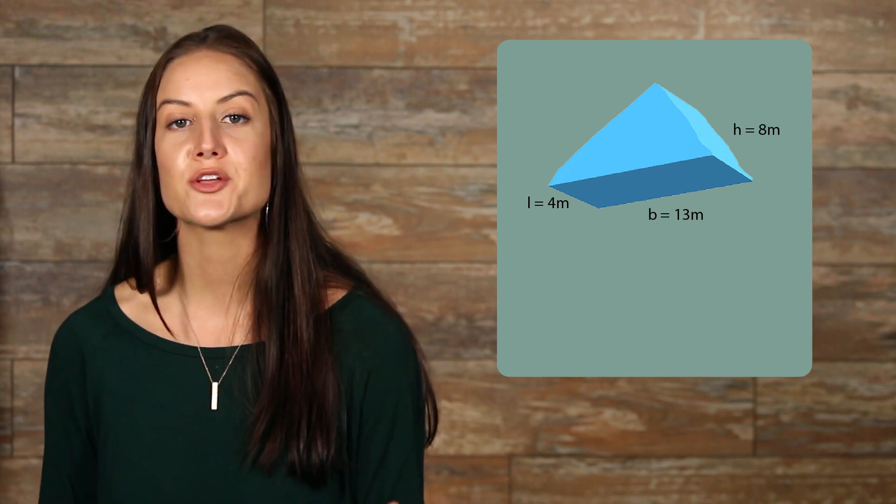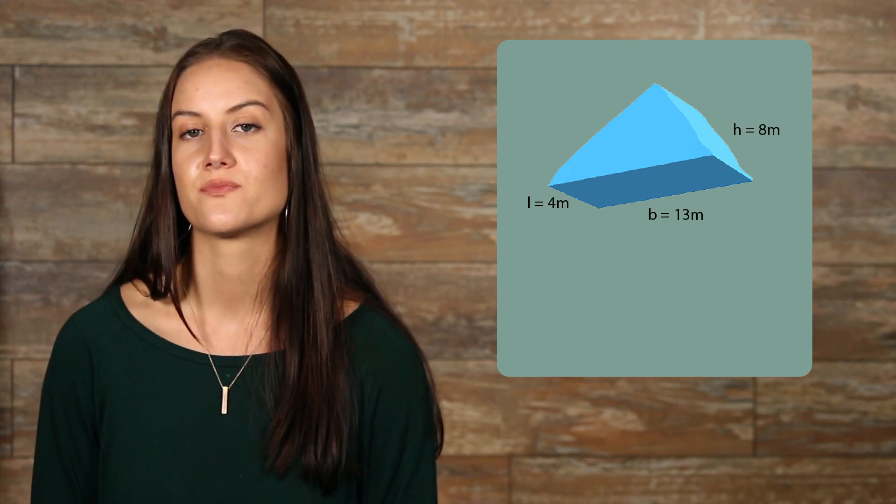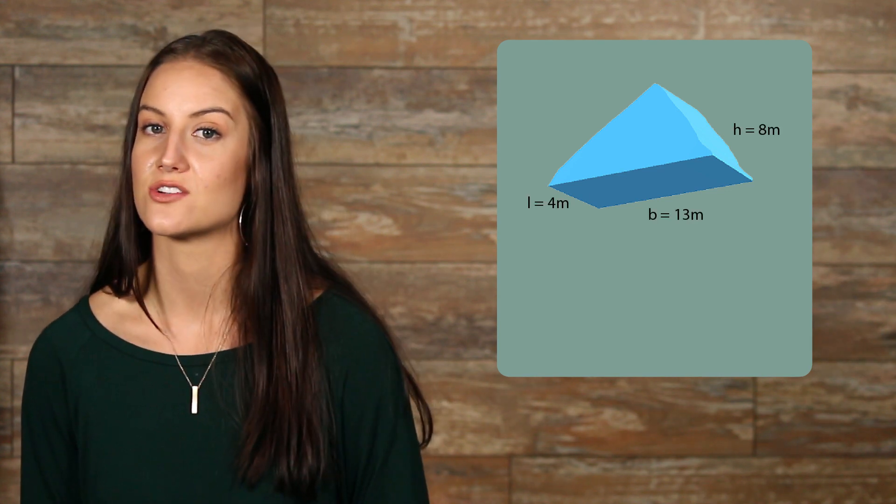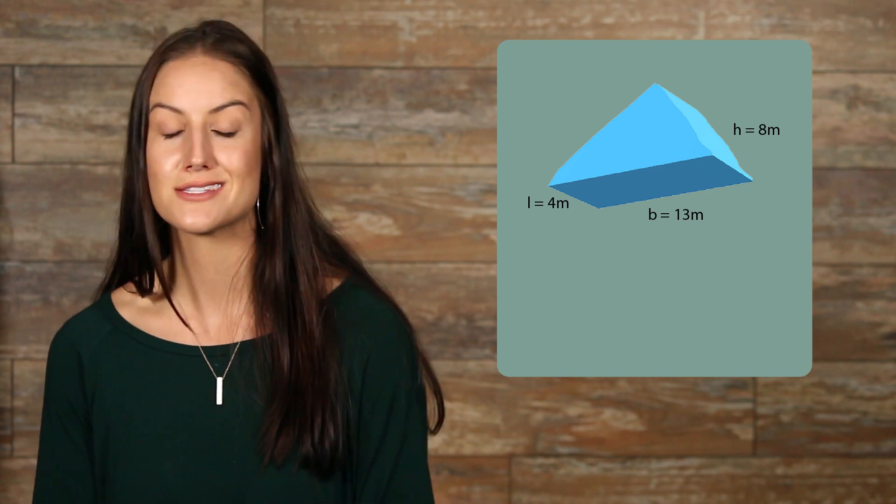Let's take a look. We have a triangular prism with a height of 8 meters, a base of 13 meters, and a length of 4 meters. All we have to do is plug our numbers into our formula, then solve.